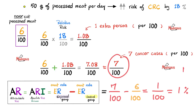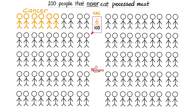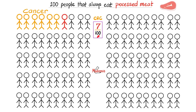Now, if the attributable risk is 1% or 1 in 100, can you find the number needed to harm? Yes — simply flip 1 over 100 to get 100 over 1, which is 100. Meaning, out of every 100 individuals who regularly consume processed meat, 1 is going to develop colorectal cancer attributable to processed meat. And that's how we go from 6 in 100 to 7 out of 100.